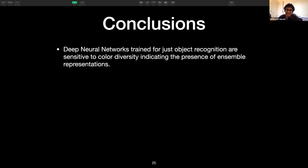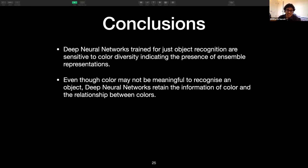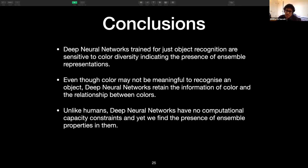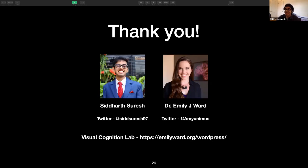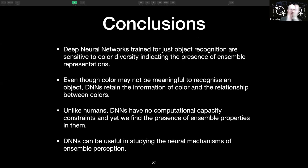I would like to conclude by saying that deep neural networks trained for just object recognition are sensitive to color diversity, indicating the presence of ensemble representations. Even though color may not be meaningful to recognize an object, deep neural networks retain the information of color and the relationship between these colors. Unlike humans, deep neural networks have no computational capacity constraints, and yet we find the presence of ensemble properties in them. Deep neural networks can be useful in studying the neural mechanisms of ensemble perception. Thank you for listening to this talk, and I would like to thank my advisor, Dr. Emily Ward.